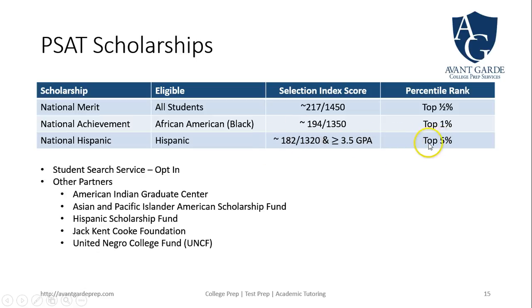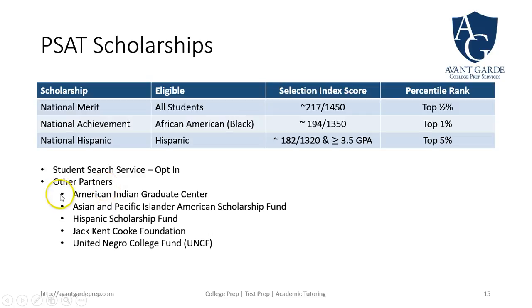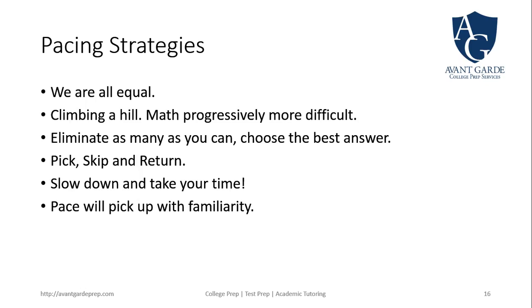You can also opt into the Student Search Service when registering for these tests. It shares your information with organizations that may contact you as a good fit for various programs and scholarships. Partners include excellent organizations like the Jack Kent Cooke Foundation and the United Negro College Fund — these can be fairly lucrative national scholarships that make a real difference in your financial situation.